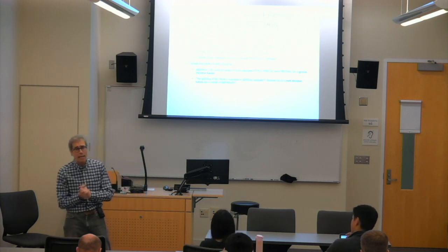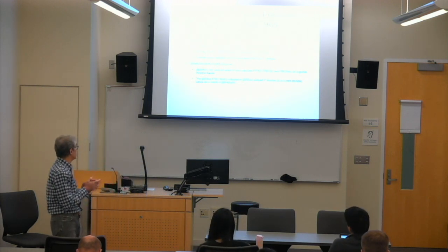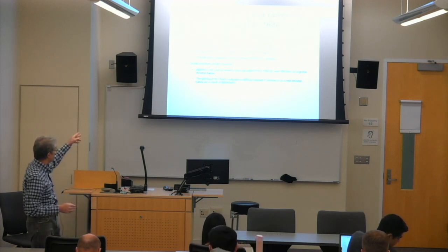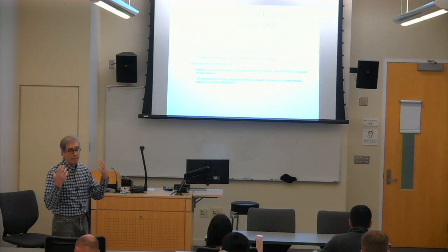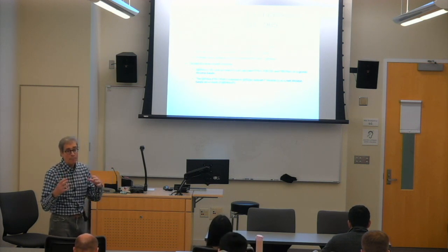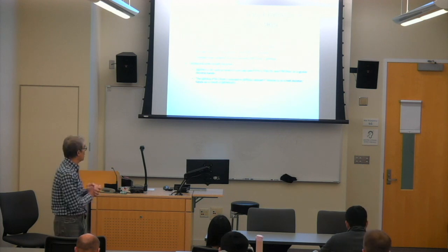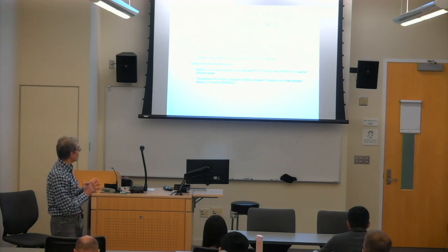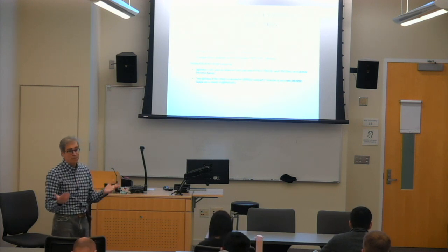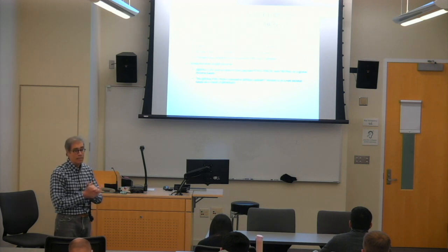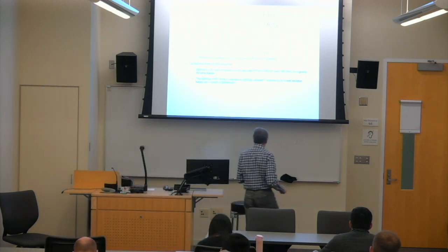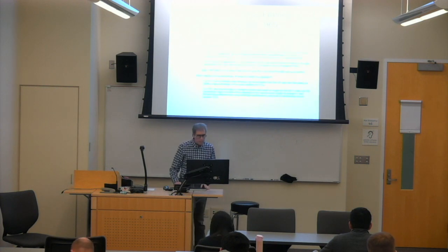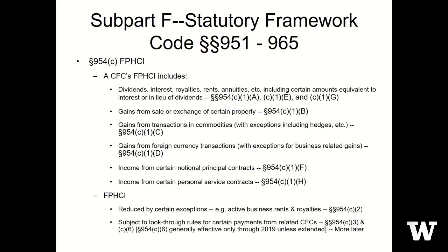When we finished class last time, we had just started talking about what makes up foreign-based company income. Foreign-based company income is, as a practical matter, the most important component of subpart F income. We had spoken about foreign personal holding company income — dividends, interest, rents, royalties, and things like that. I don't think we had gotten to this particular slide, which indicates a number of the other items that are included.